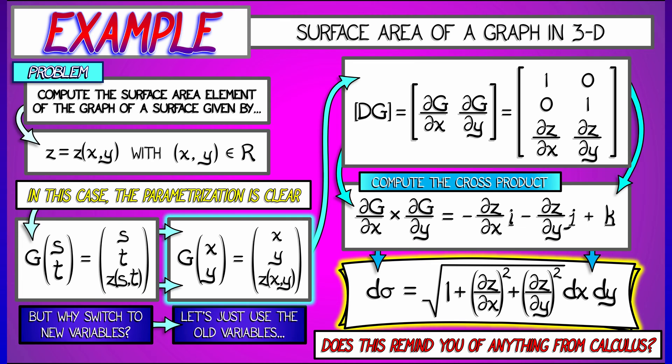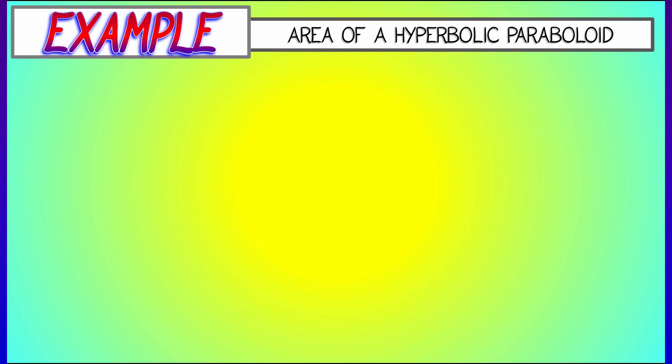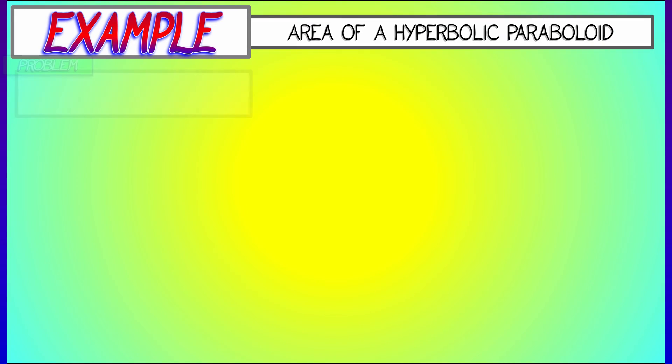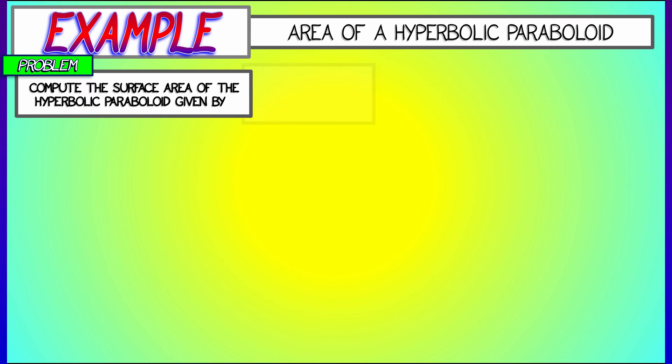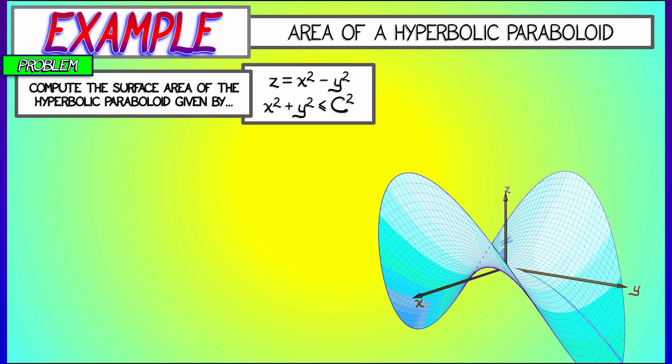Okay, let's look at an application of this formula to the area of a hyperbolic paraboloid. Something given by the graph z equals x squared minus y squared. This is a great-looking surface, one of my favorites.